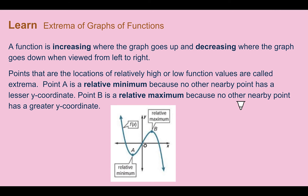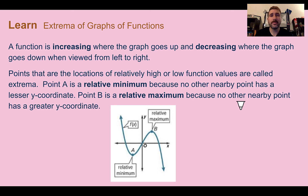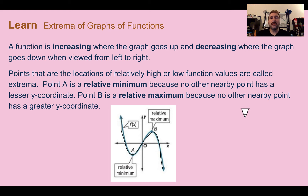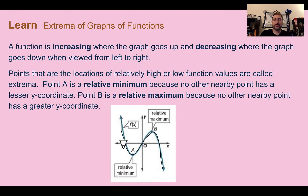Let's learn. Extrema of graphs of functions. A function is increasing where the graph goes up, and decreasing where the graph goes down, when viewed from left to right. I like to think of increasing and decreasing as a roller coaster — if you're going down, you're decreasing; then you hit the bottom, and you're increasing; then you hit the top, and you're decreasing again. The points located at relatively high or low function values are called extrema. Point A is a relative minimum because no other point nearby has a lesser y-coordinate — it's the lowest point in that area. Point B is a relative maximum because around it, no other point is larger. The minimums are the bottoms of the hills, while the maximums are the tops.